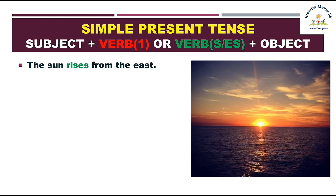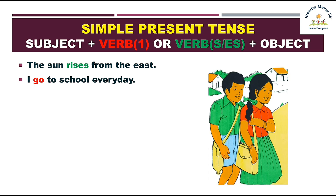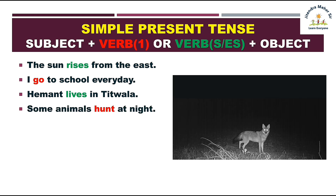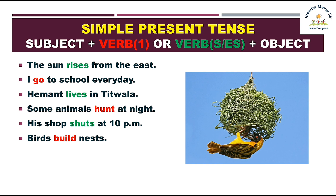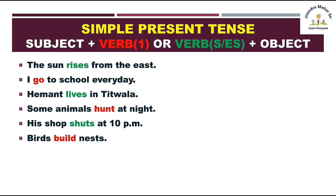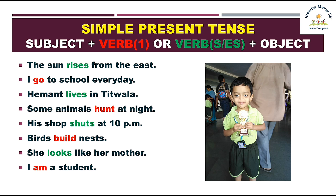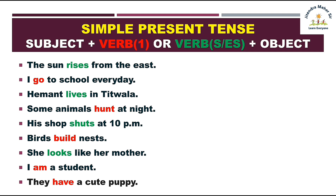Chalo kuch sentences dekhte hain: The sun rises from the east. I go to school every day. My school opens at home. A monk lives in Titwala. Some animals hunt at night. His shop shuts at 10 PM — uska dukaan roz 10 baje band hota hai. Birds build nests. She looks like her mother. I am a student. They have a cute puppy.